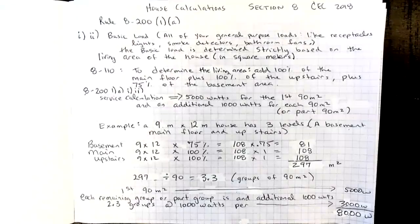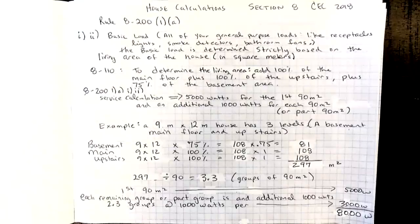So then moving on, 8-200-1A, items one and two, speak to how we actually apply the basic load to our service calculation. And what we do is we take a demand factor of 5,000 watts for the first 90 meters squared living area of the house and an additional 1,000 watts for each 90 meters squared or portion of 90 meters squared. So that means if you just have one meter squared left over, you would have to take a full 1,000 watts towards the demand factor.